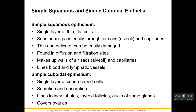Simple squamous epithelium: flat cells, just one layer. Structure determines function — being super thin and single-layered means things can pass through very quickly. We see this in the air sacs of the alveoli in the lungs and in capillaries where we want diffusion to happen. Because they're so thin, they're delicate and easily damaged, but these locations are highly protected. They allow diffusion and filtration and also line blood vessels and lymphatic vessels.